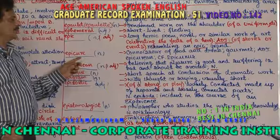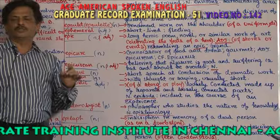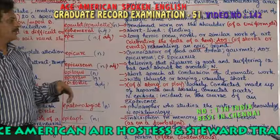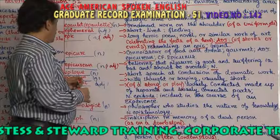Epicure — connoisseur of food and drink. Any person who is very good at tasting food, who is a specialist in food, is called an epicure. A connoisseur — a person who is good at one's art — is called an epicure. The adjective is epicurean.